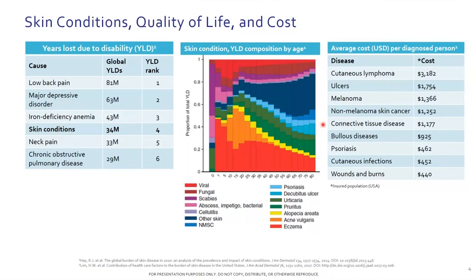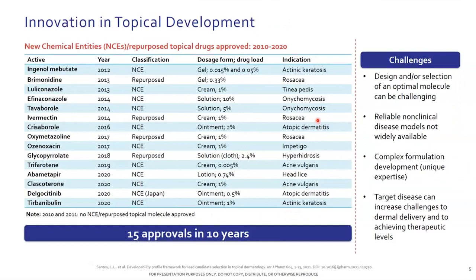When we talk about topical development, this audience should all agree that developing a topical is not merely a matter of putting a powder into a cream base — there's a lot of science behind it, and it's extremely complex to develop semi-solid formulations. When we look at the data, we essentially had 15 new chemical entities approved in the past 10 years, even considering some repurposed molecules. The point here is to say there is a clear need, because of the incidence of skin diseases, and these products are challenging to develop, even in the context of generics.